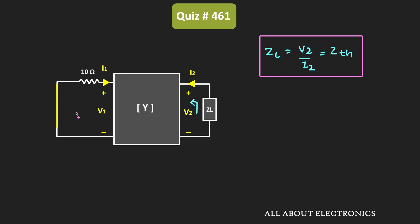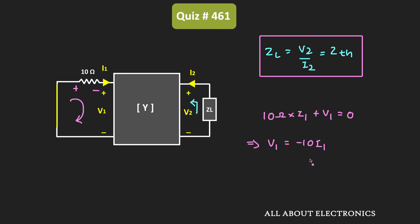So in this condition, let us first apply KVL on the input side. Applying KVL on the input side gives us 10 Ohm times I1 plus V1 equals zero, or V1 equals minus 10·I1. Let's call this equation number 1, which we will use later to find the ratio of V2 and I2.